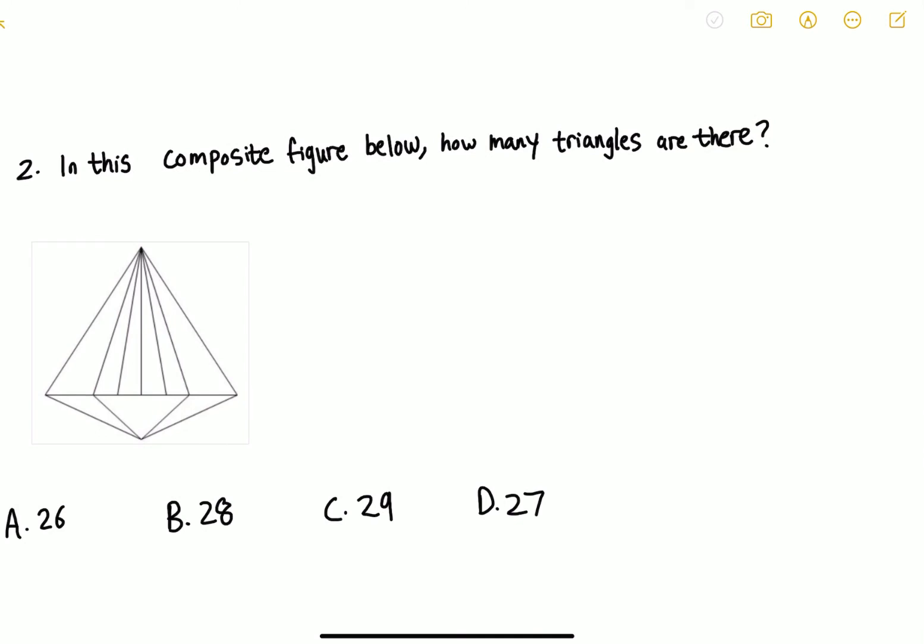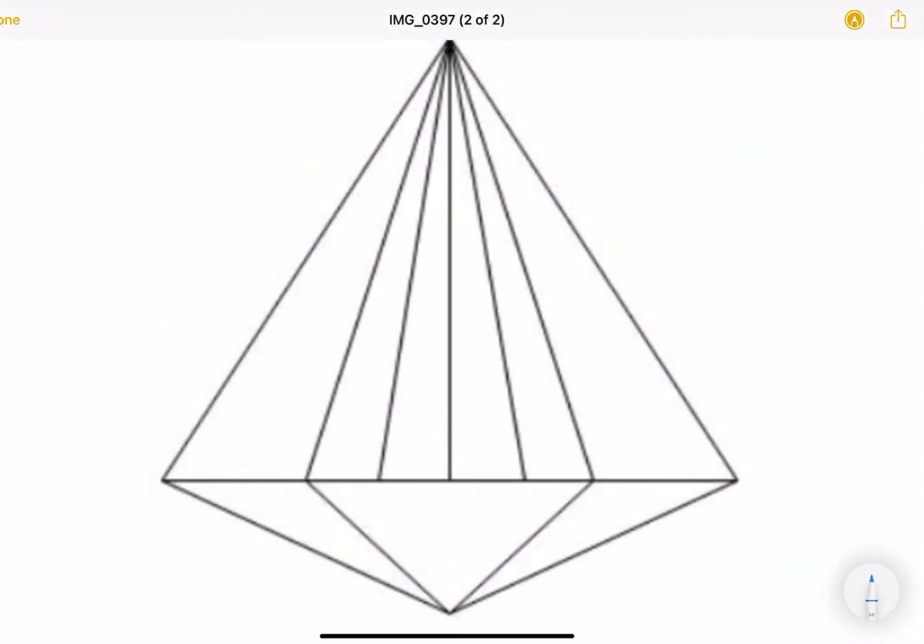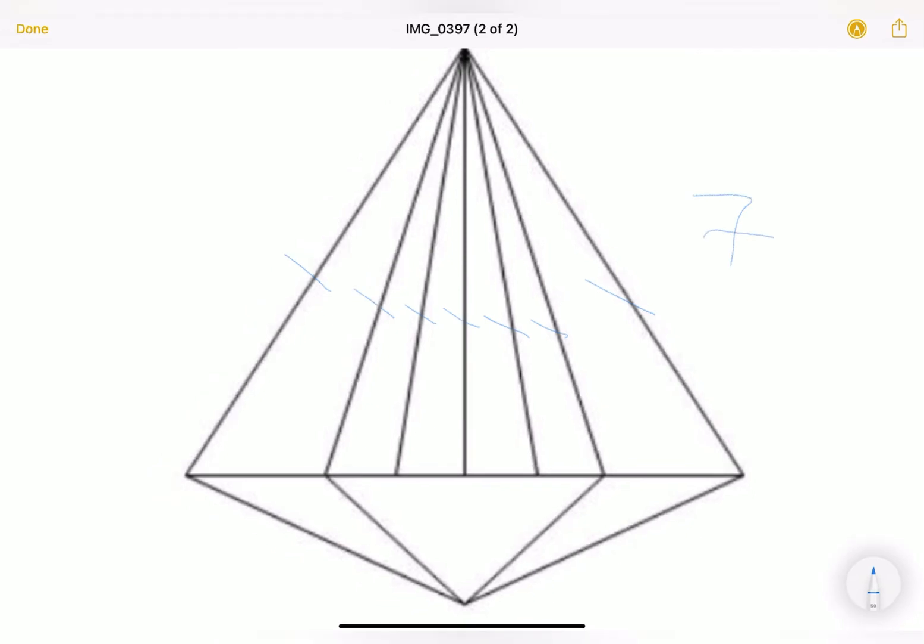Now let's move on to question number two. This is a similar question, so pause this video and try to do this yourself. In this composite figure below, how many triangles are there? Again, we count how many lines there are. Let's take a look: there's one, two, three, four, five, six, seven lines on the top triangle.